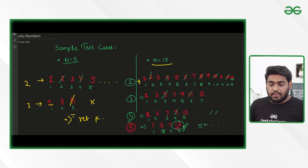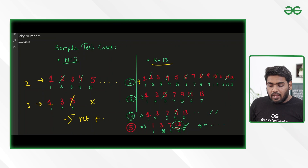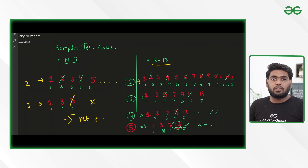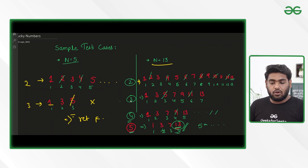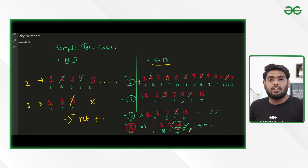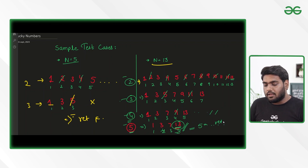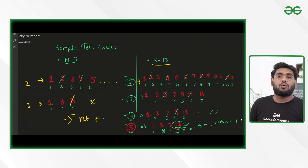This is the base case. When the number we are looking for ends up at a position which is less than the pass value, and it has successfully made it till here, then we can say yes, this is a lucky number and we can return true.